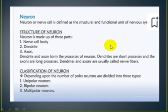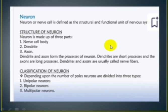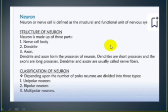Anatomically, neurons can be classified into three types, though some authorities classify them into four types. The types are: one — unipolar neurons; two — bipolar neurons; and three — multipolar neurons.